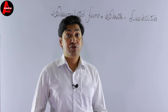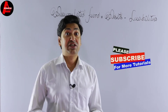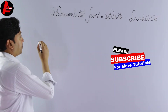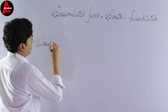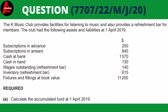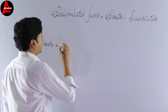First of all we need to classify the assets and liabilities. Let's get the total of assets first. The first item is subscription in advance — this is not an asset, it is a liability, so we will write it later. Then we have subscription in arrears: $845. This is an asset, so we write this amount: $845.